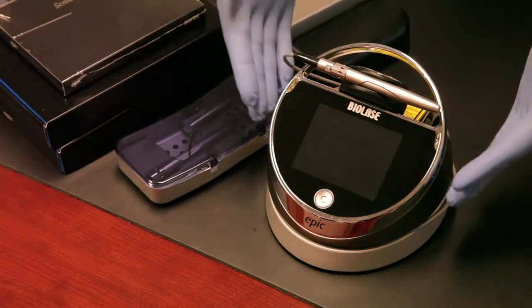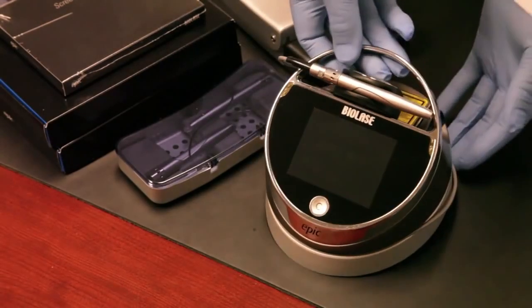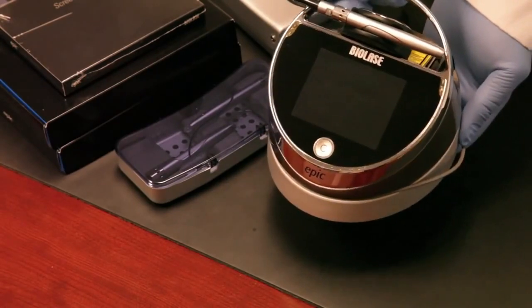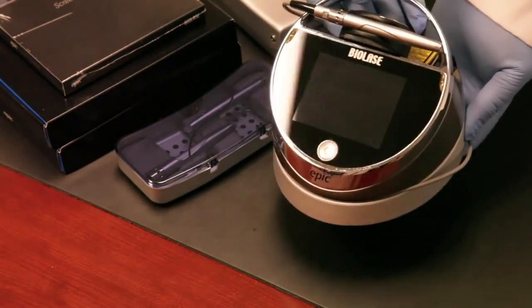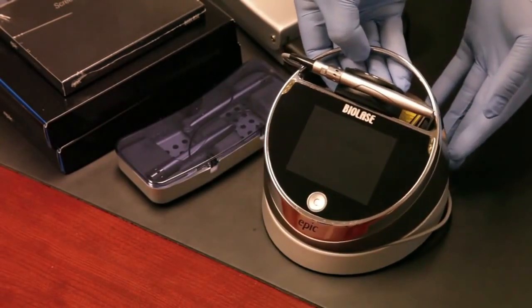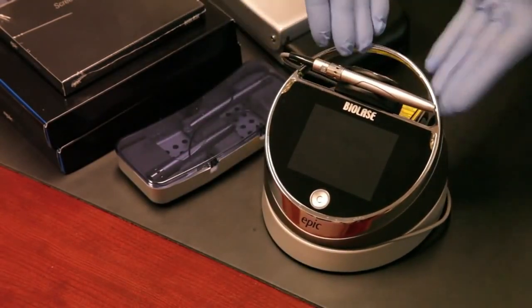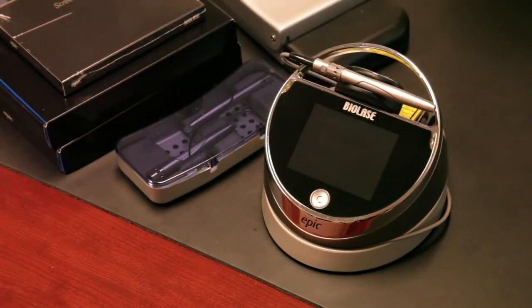The first thing you can see here is our EPIC laser. You can see that it's about four to five inches in diameter and it's around two to three pounds, real lightweight, real easy, and a very good looking device to have on your countertop in your operatory. We'll turn it on in a moment and go through some of the controls of the UI.